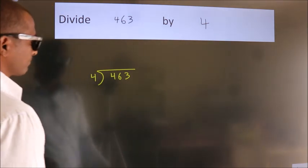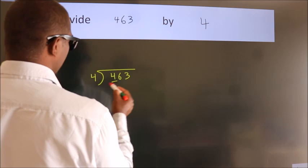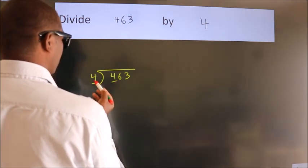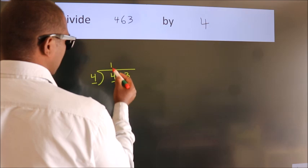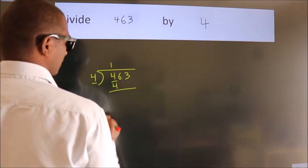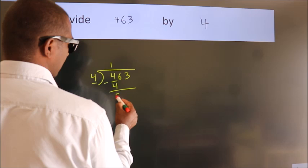Next. Here we have 4, here 4. When do we get 4? In the 4 table: 4 once, 4. Now we should subtract. We get 0.